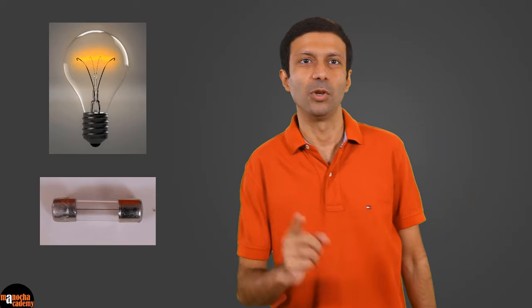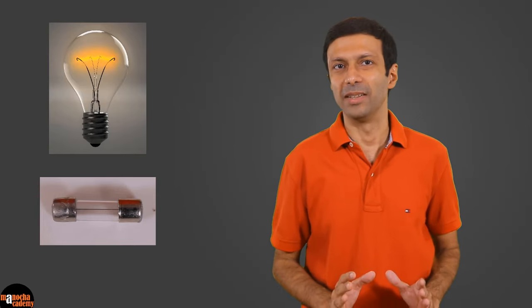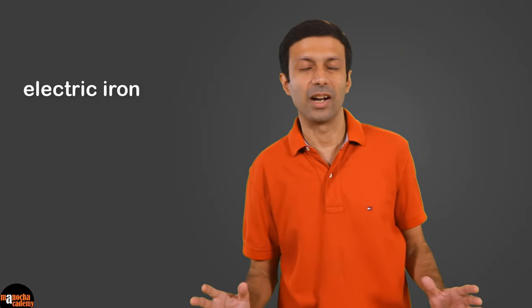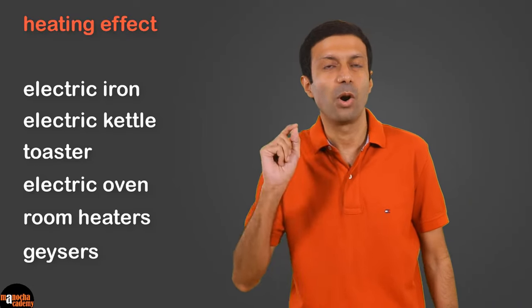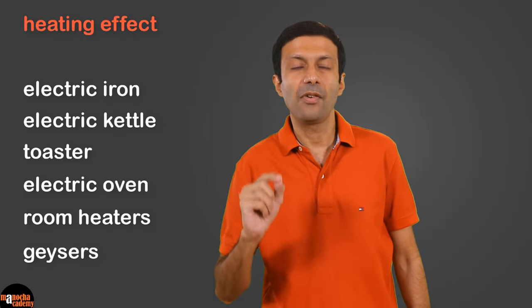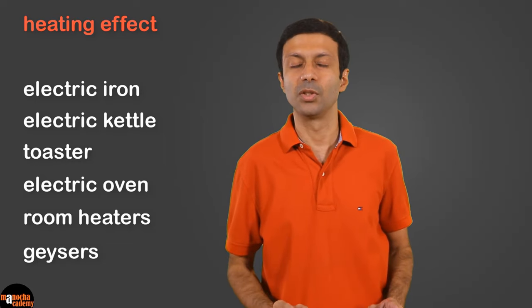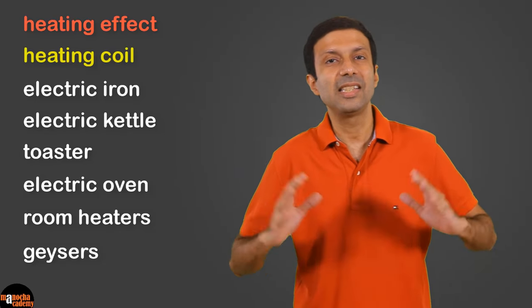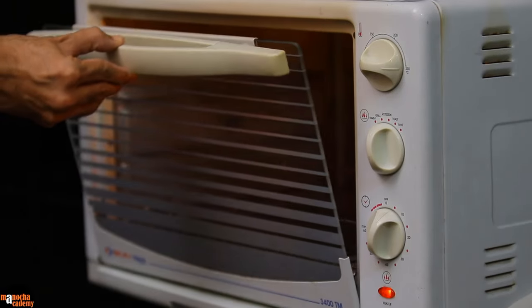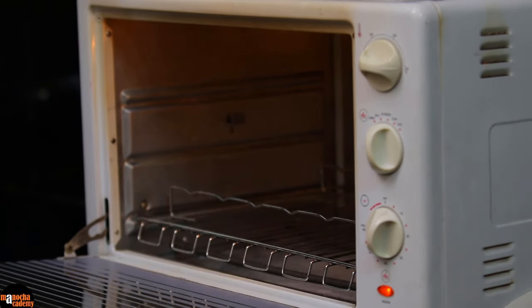The heating effect of current has various applications: in the working of electrical heating appliances, in electric bulbs to produce light, and in the electric fuse. Electrical heating appliances such as electric iron, electric kettle, toaster, electric oven, room heaters, and geysers all work on the heating effect of current. These appliances have a high resistance wire called the heating element or heating coil. You can easily see the heating element in toasters and electric ovens — it is the coil that becomes red hot and glows.